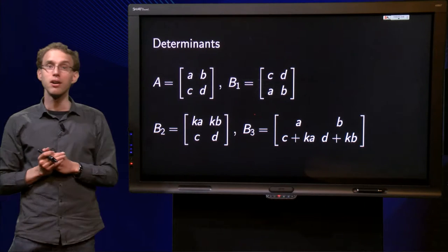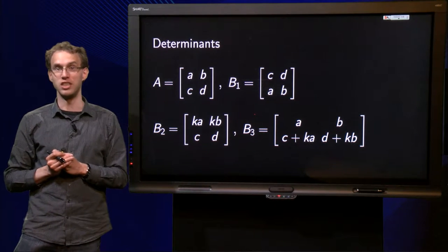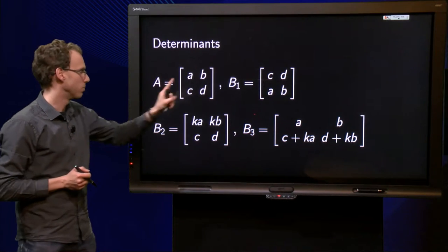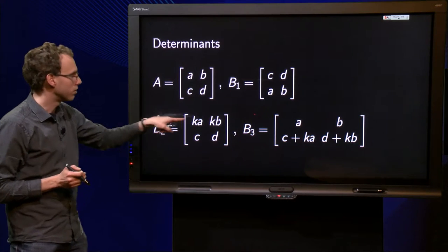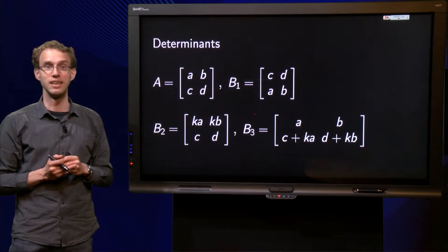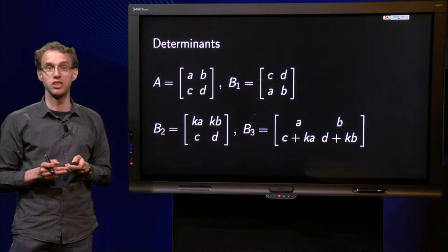We will use a few toy matrices to see this, with the matrix A, B1, B2, and B3. As you see, you can get B1 up to B3 out of A by just applying one row operation. Let us see how the determinants change.